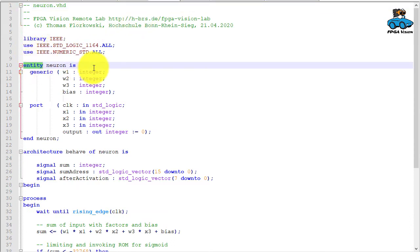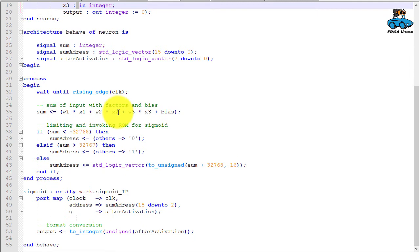Here is the submodule for the neuron. Entity description with generic values and the signal inputs, signal output. You can have a look at the code for yourself. Here are the multiplications we have. Then we have a limiting before we go to the lookup table, which is invoked here. Then we have the output.